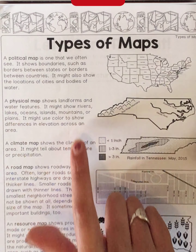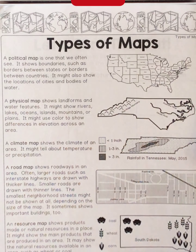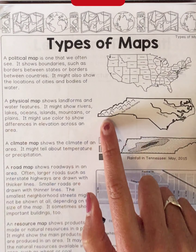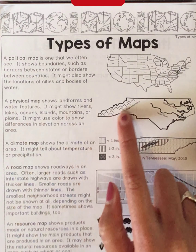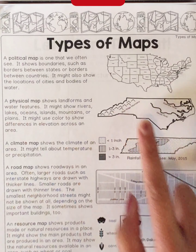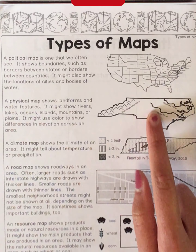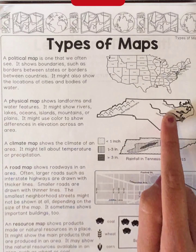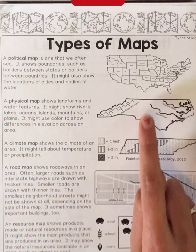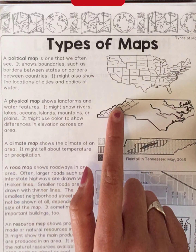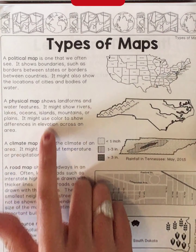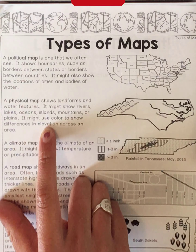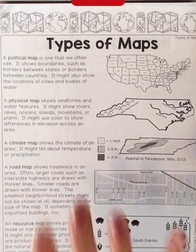A physical map is what you guys created when we did our landform project. It shows landforms — like the little up arrows here represent mountains, and these lines and bodies represent bodies of water and rivers. It might also show you other landforms, and it will also show you elevation — how tall or how low something is relative to sea level.